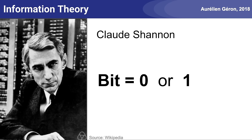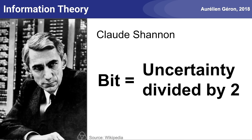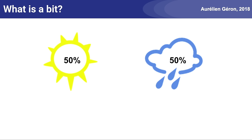Of course you know that a bit is a number that is either equal to zero or one, but not all bits are useful. Some of them are redundant, some of them are errors, and so on. So when we communicate a message, we want as much useful information as possible to get through. In Shannon's theory, to transmit one bit of information means to reduce the recipient's uncertainty by a factor of two.